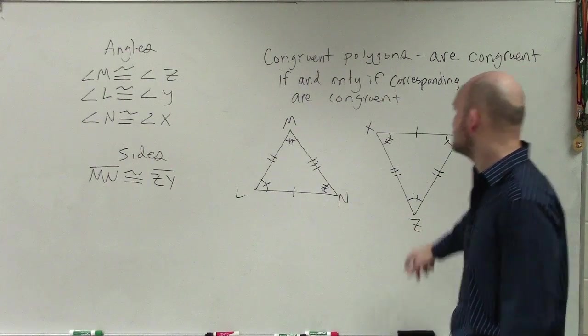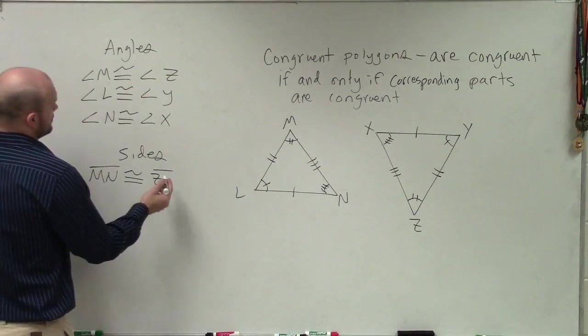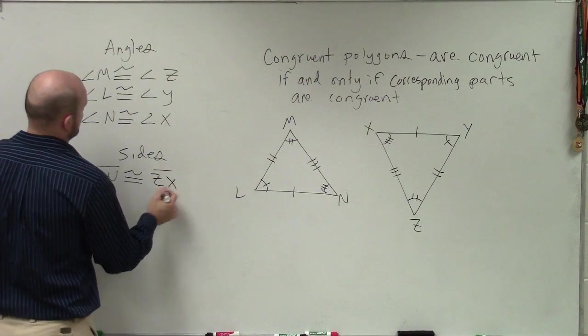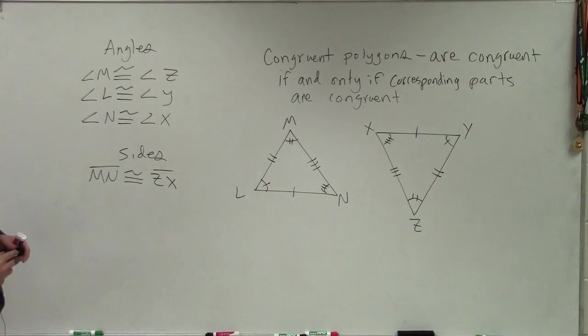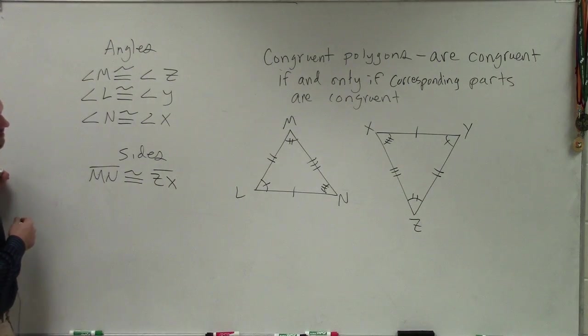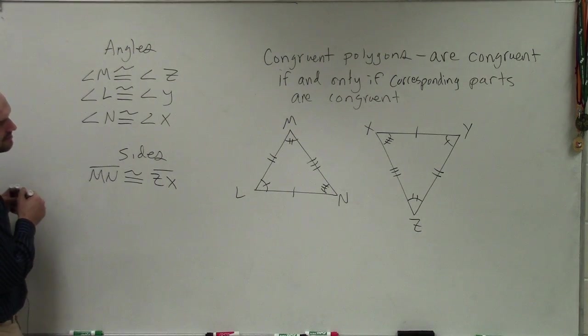Or that's not right, as what I wrote up there. MN is going to ZX. Sorry about that. No wonder. N is congruent to X. Sorry, I was looking at the wrong one. MN goes to ZX. There you go.